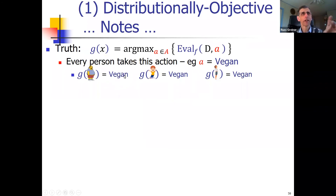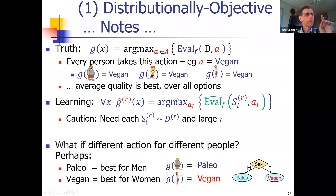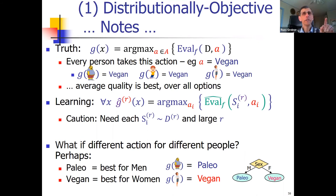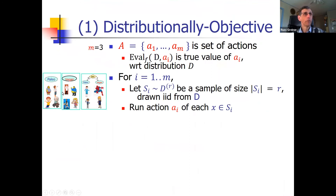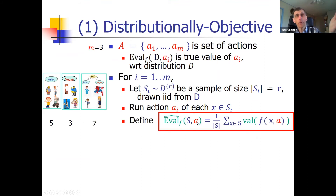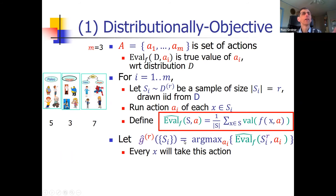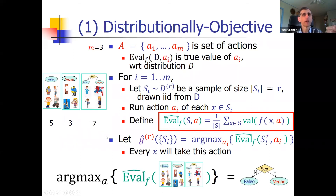What if instead of everyone getting the same action, I define a policy: males get paleo, women get vegan? This is a complex decision rather than a single action. I now have three options: give everyone paleo, everyone vegan, or use this complex sex-based policy. Taking the maximum expected value over samples from these options, I can choose the best complex action. In this particular case, seven is best — the optimal action is a complex policy, not just a single uniform choice.